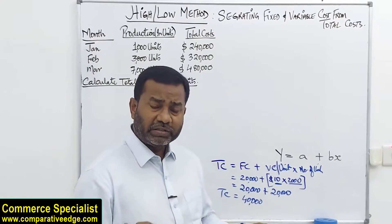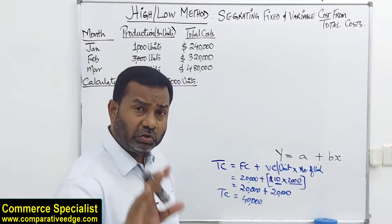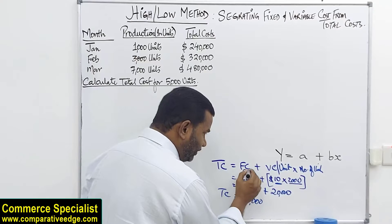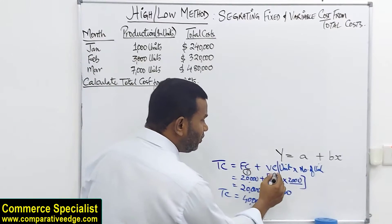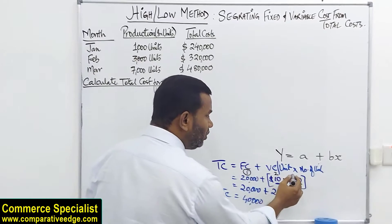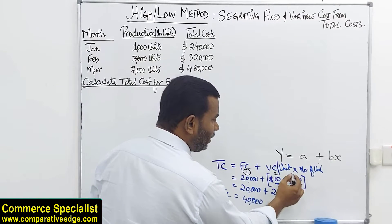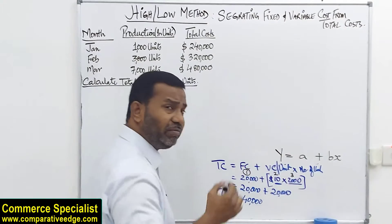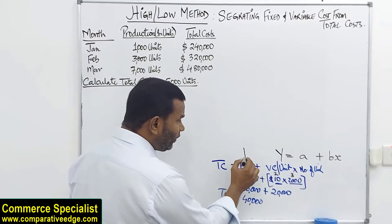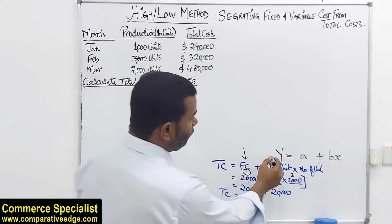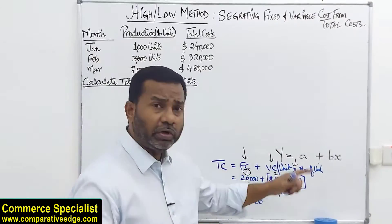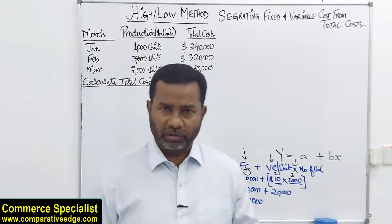This is how we calculate total cost. One thing everybody needs to remember is if you are asked to calculate total cost, you require three information: you need to know how much is the fixed cost, how much is variable cost per unit, and what are the number of units we are talking about. Unless you know these three information, you cannot calculate total cost.